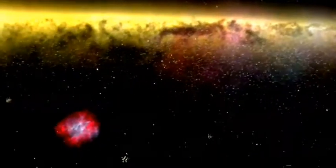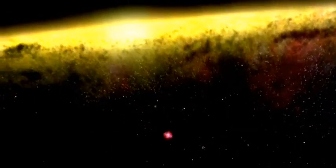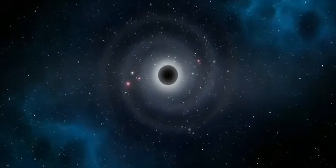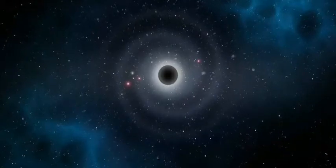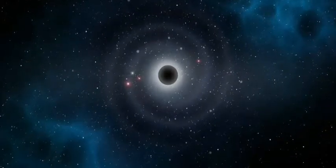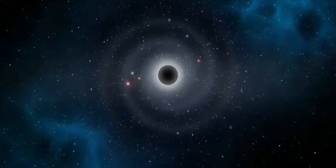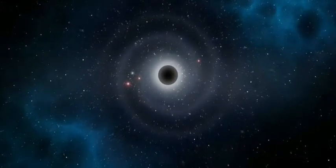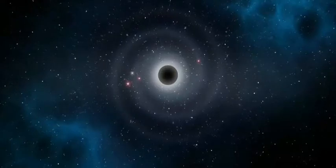Most larger galaxies have a supermassive black hole at the center, and the Milky Way is no exception. The center of our galaxy is called Sagittarius A, a massive source of radio waves that is believed to be a black hole that measures 22.5 million kilometers across, about the size of Mercury's orbit. It has a mass of about 4 million times the mass of the Sun.